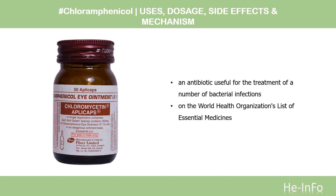Chloramphenicol was discovered after being isolated from Streptomyces venezuelae in 1947. Its chemical structure was identified and it was first synthesized in 1949. It is on the World Health Organization's list of essential medicines.